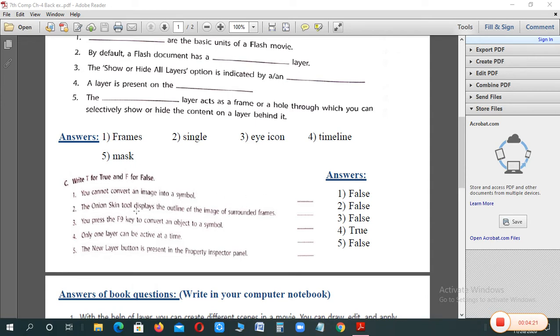The onion skin tool displays the outline of the image of the surrounded frame. Does the onion skin tool see the outline of the image? False. The onion skin tool is to dim or faint.